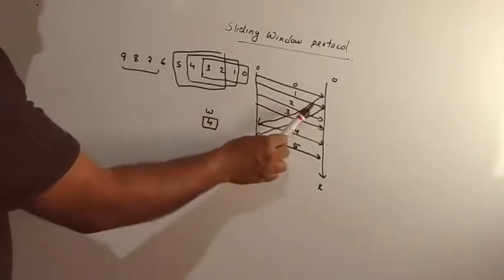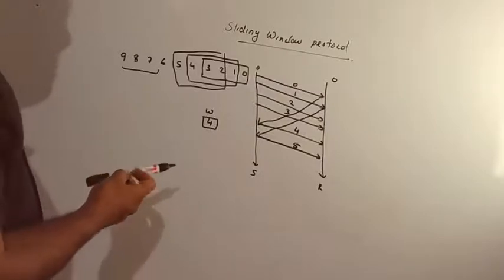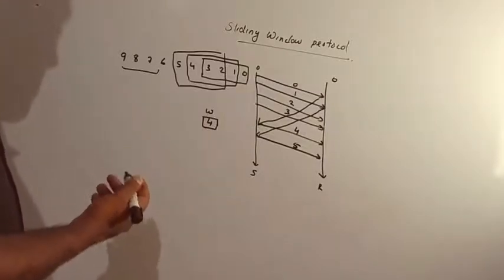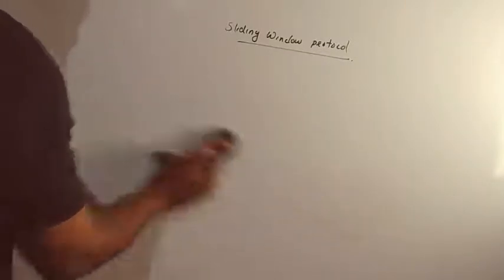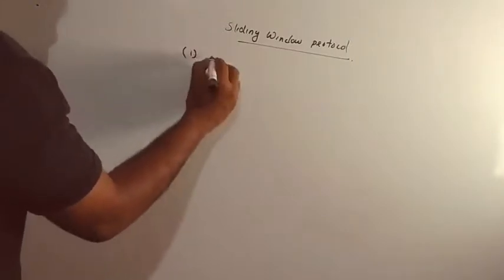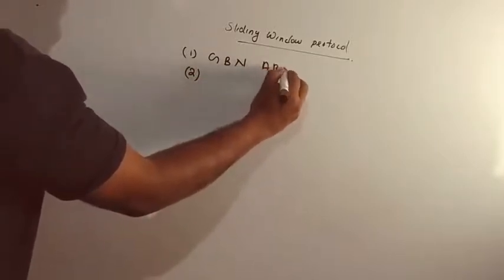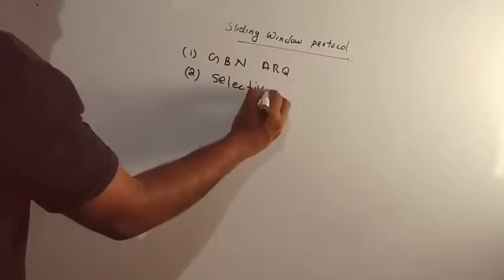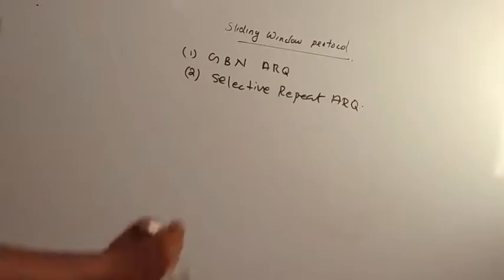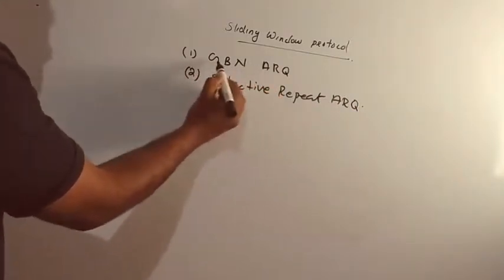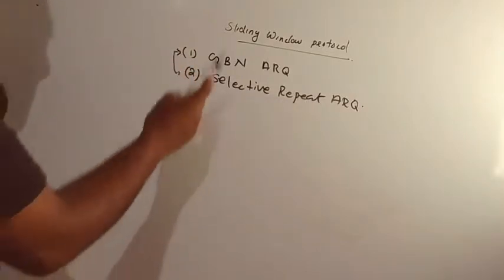There is an error handling aspect. There are a group of frames with actual errors. The sliding window protocol has two sub-protocols. The first is Go-Back-N ARQ (GBN) and the second is Selective-Repeat ARQ. These two protocols — Go-Back-N ARQ and Selective-Repeat ARQ — are available in the next videos.